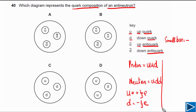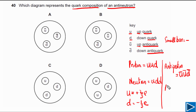If we have a proton and need the quark composition of an anti-proton, each quark simply becomes an anti-quark. So an anti-proton has two up anti-quarks and one down anti-quark. For an anti-neutron, we follow the same logic: the neutron has one up quark and two down quarks, so the anti-neutron has one up anti-quark and two down anti-quarks.